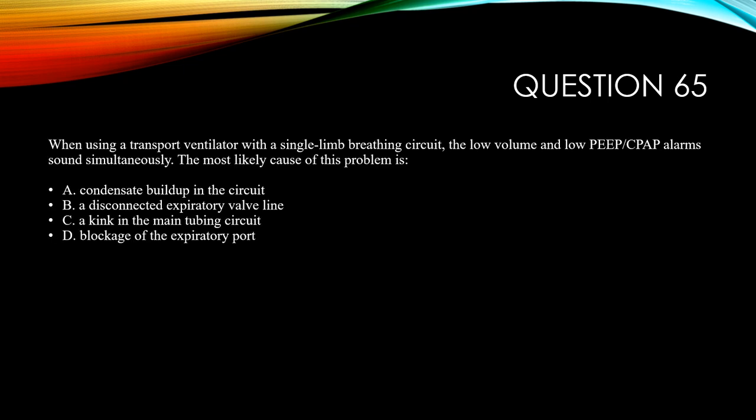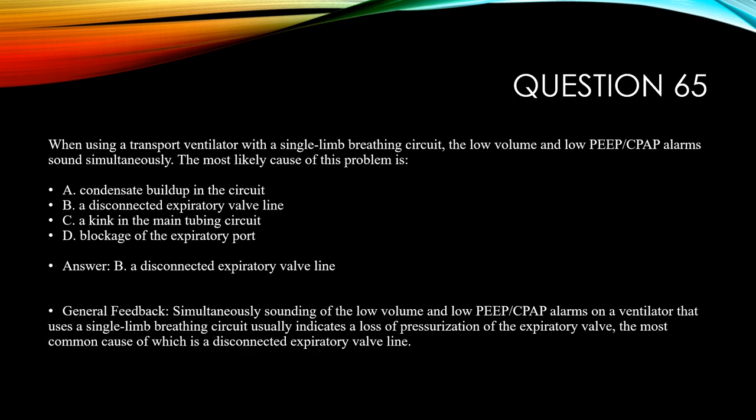Question 65. When using a transport ventilator with a single-limb breathing circuit, the low volume and low PEEP/CPAP alarms sound simultaneously. The most likely cause is: A, condensate buildup in the circuit. B, a disconnected expiratory valve line. C, a kink in the main tubing circuit. Or D, blockage of the expiratory port. The answer is B, a disconnected expiratory valve line. Simultaneous sounding of low volume and low PEEP/CPAP alarms on a ventilator using a single-limb breathing circuit usually indicates loss of pressurization of the expiratory valve (the mushroom valve), most commonly caused by a disconnected expiratory valve line.